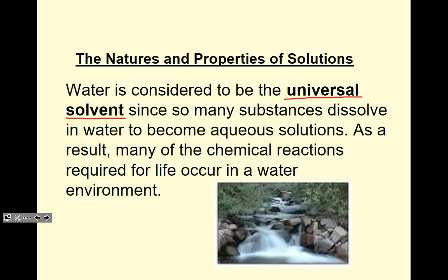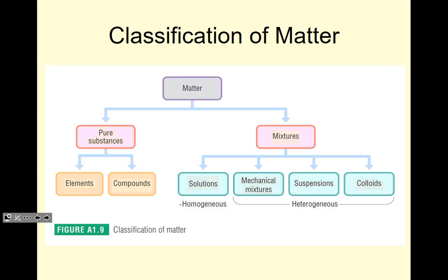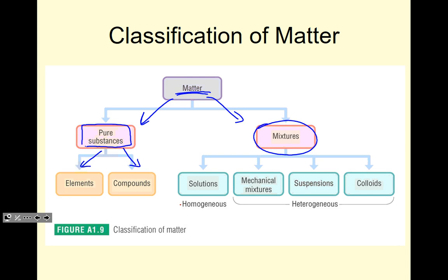Solutes are dissolved in the solvent of water. As you recall from Grade 9, matter is made up of two main categories: pure substances, which are broken down into elements and compounds, and mixtures. For now, we're going to talk about solutions. Solutions are homogeneous — they're clear, and if they're in liquid form they could be colored but they're still clear. Mechanical mixtures you can tell apart with your naked eye, for example a combo of salt and pepper.